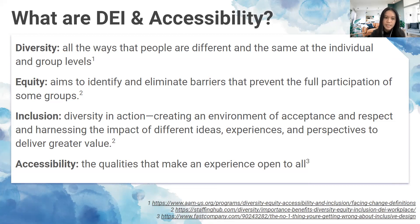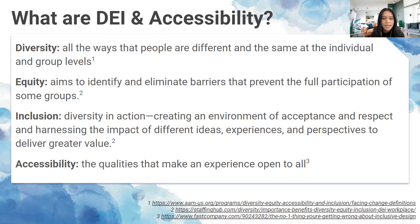Equity — not to be confused with equality — aims to identify and eliminate barriers that prevent the full participation of some groups. Equality is treating everyone the same exact way no matter their circumstances. Equity is providing for groups to experience equal outcomes. If we all want to cross the finish line at the same time, we won't all start at the same starting point — some will have a different start location to ensure everyone reaches the end at the same time.